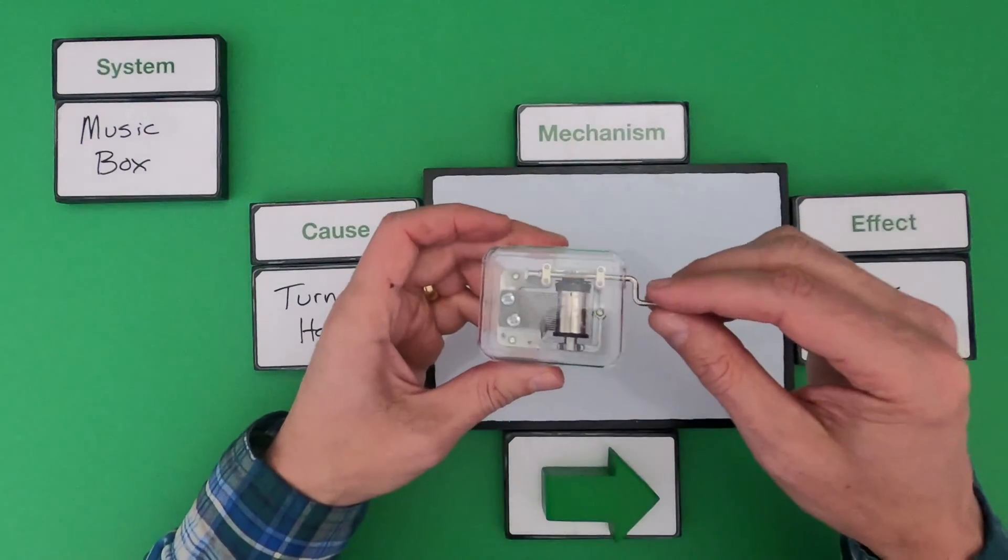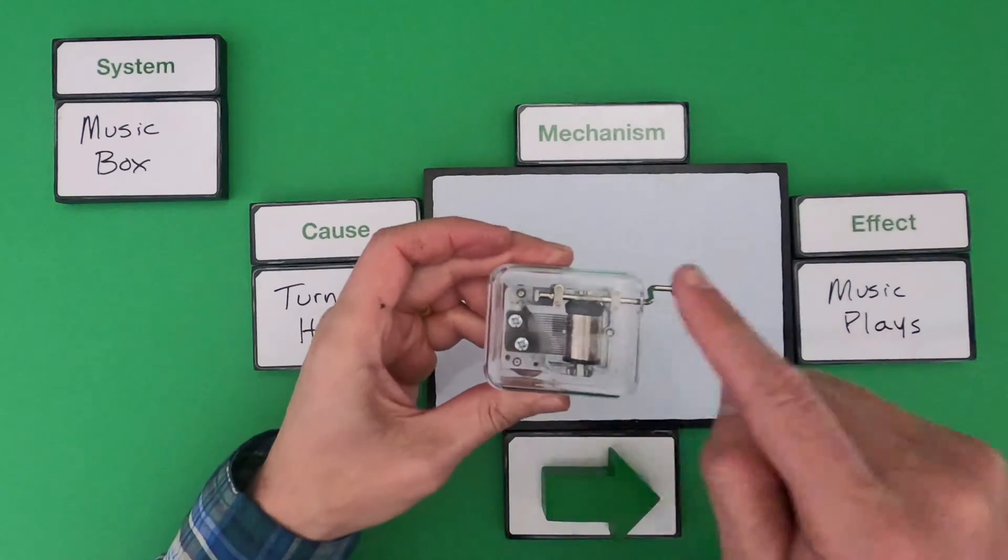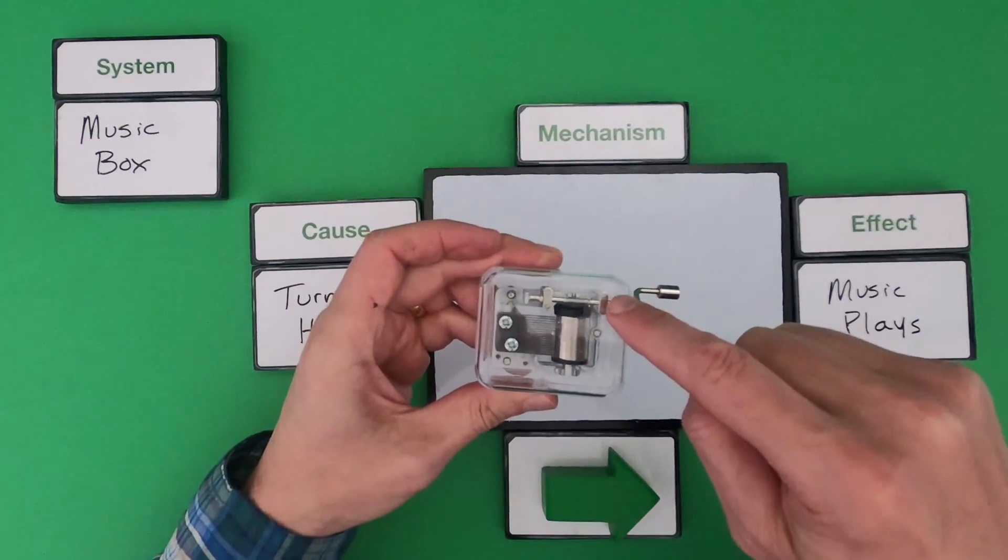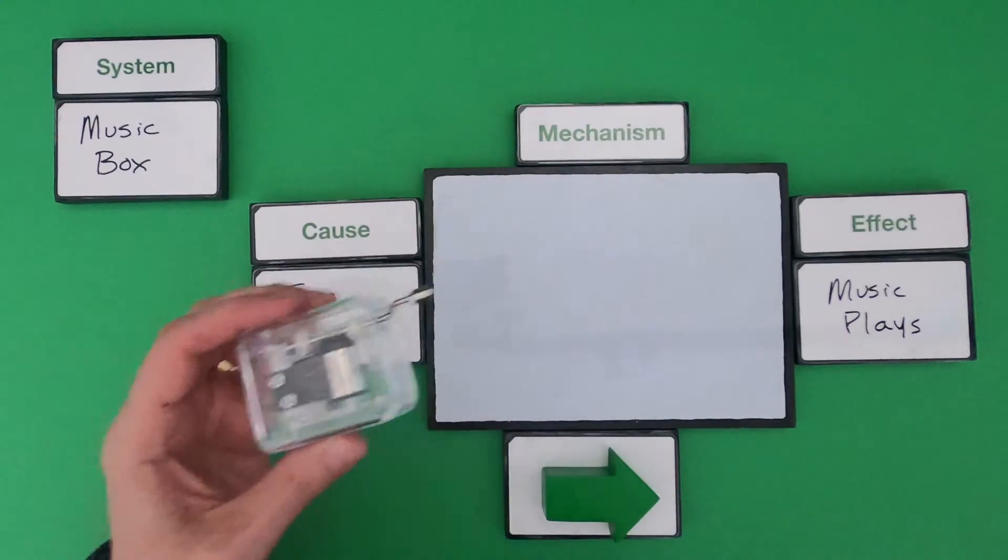If I do this, there's really three things that I see going on. There's a turning of this crank, a rotating of the drum, and then we get some vibration in these combs. So let me write that down.